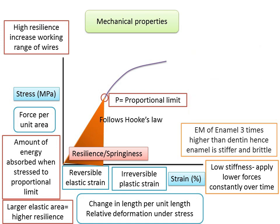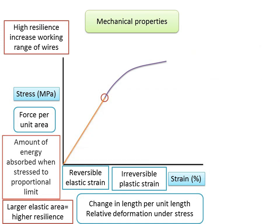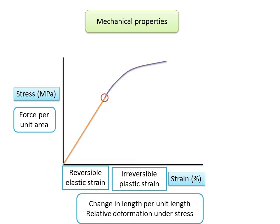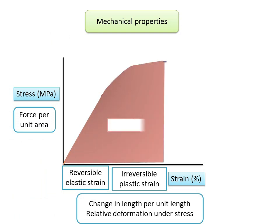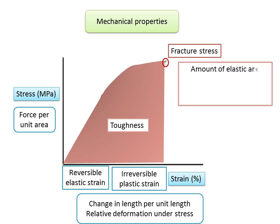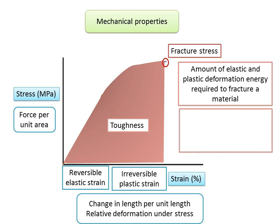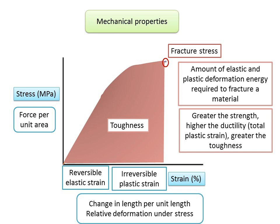The modulus of resilience is the energy required to stress a structure to its proportional limit, measured by the area under the elastic straight-line portion of the stress-strain curve. Toughness, by contrast, is the total area under the stress-strain graph from zero stress to fracture stress — the amount of elastic and plastic deformation energy required to fracture a material. Toughness increases with both strength and ductility; a tough material is generally strong, although a strong material is not necessarily tough.